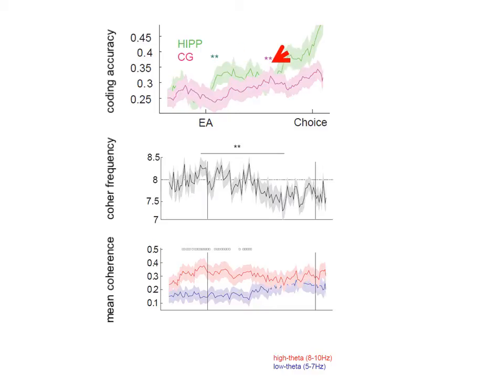then in cingulate. This is associated with a parallel decrease in the mean frequency of theta coherence, with trial onsets dominated by coherence at high theta frequencies of 8 to 10 Hz and low coding accuracy, and decision stages by relatively higher coherence at low theta frequencies, 5 to 7 Hz, and higher coding accuracy.